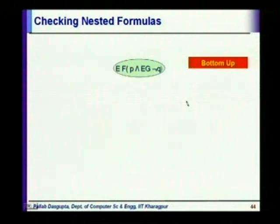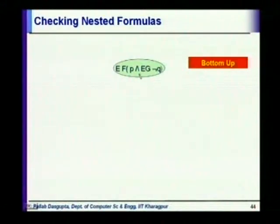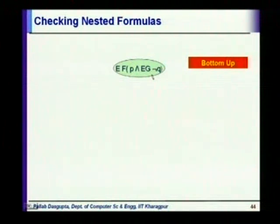Welcome back. Let us get started with the CTL model checking algorithms for checking nested properties. So far, what we had seen was how we can check properties which have a single existential quantifier and any of the temporal properties like X, G, or F. Now let us start by looking at a property like E F (p and E G (not q)), where E G is nested within E F.